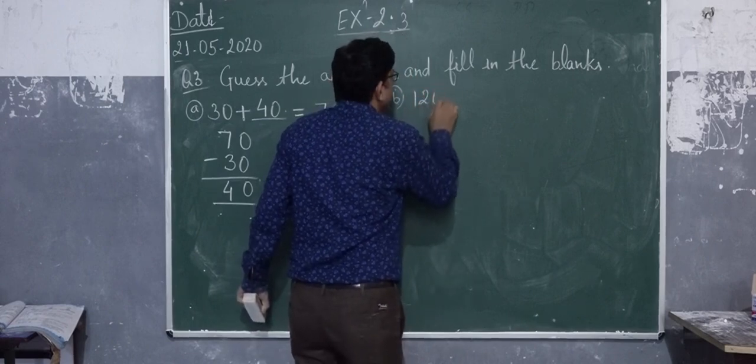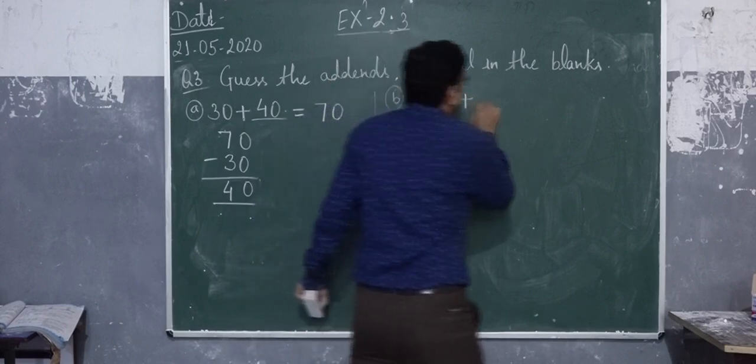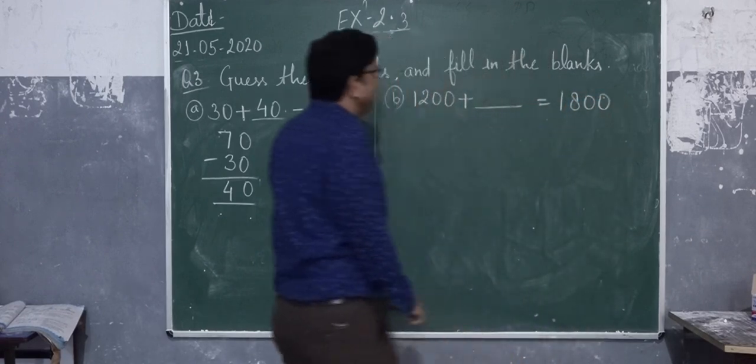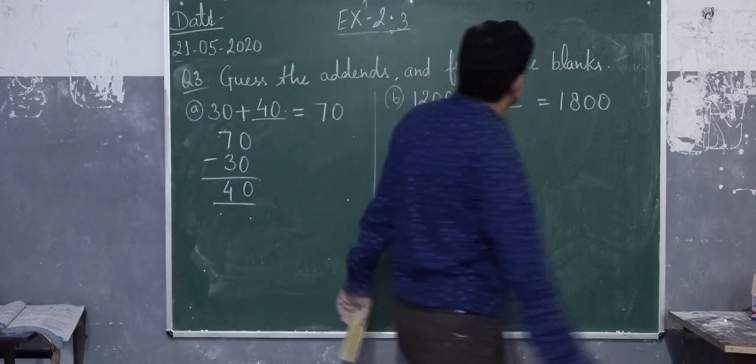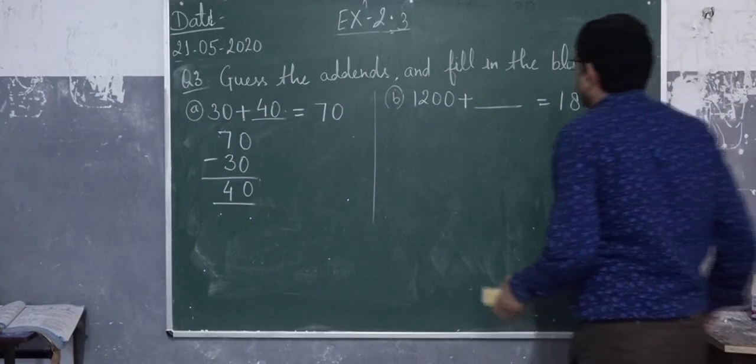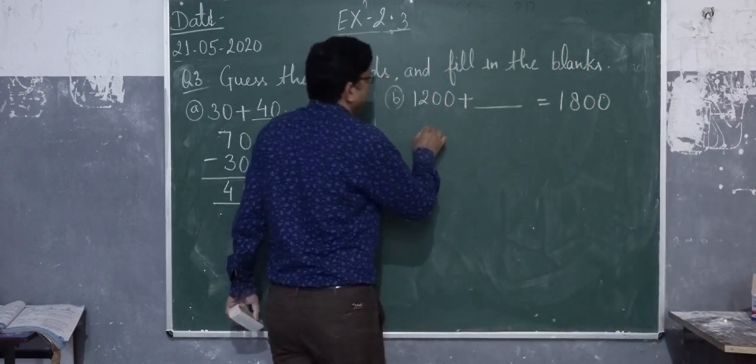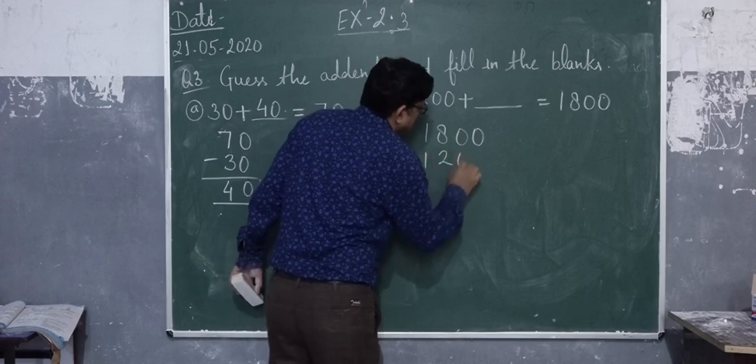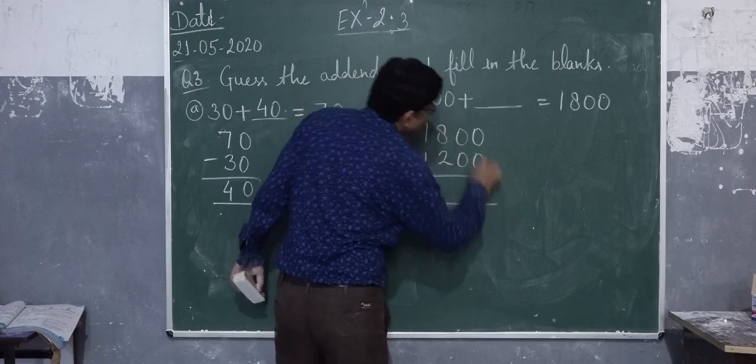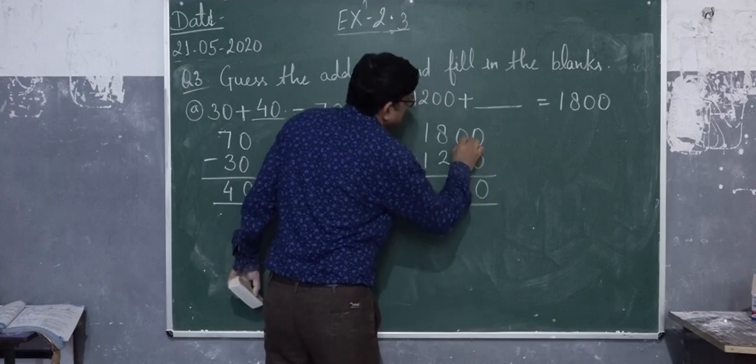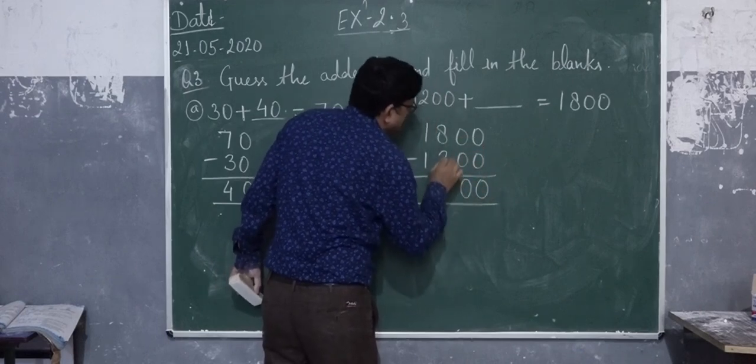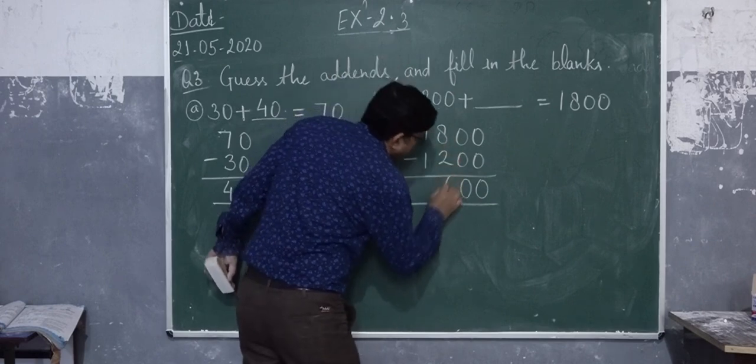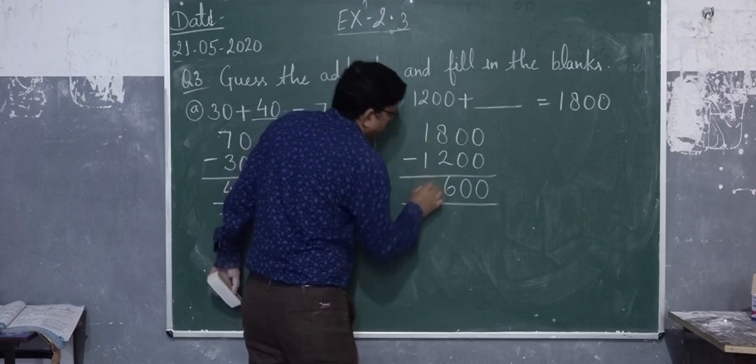1260 plus what is equal to 1800? First, we subtract. 1800 minus 1260. 0 minus 0 is 0. 0 minus 6... 8 minus 2 is 6. 18 minus 12 is 6. 600.